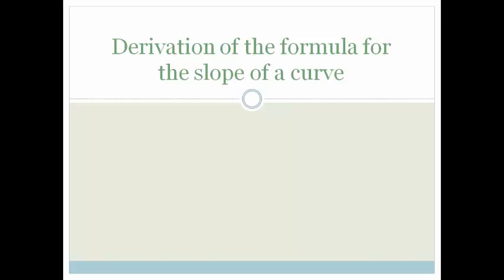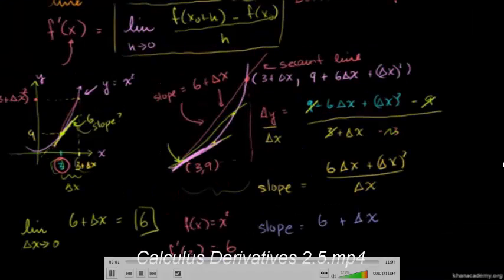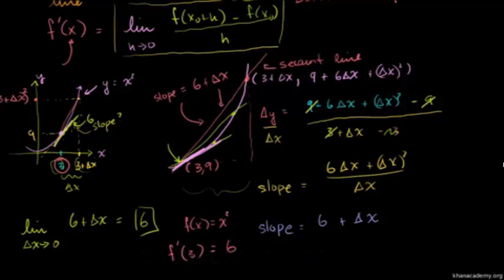Now we're going to look at how to derive the formula for the slope of a curve. In the last video, we found the slope at a particular point of the curve y is equal to x squared. But let's see if we can generalize this and come up with a formula that finds us the slope at any point of the curve y is equal to x squared.